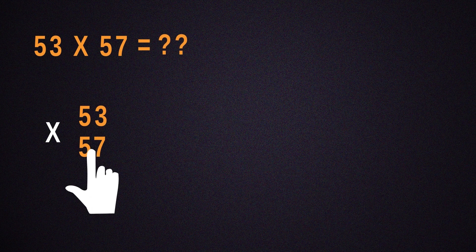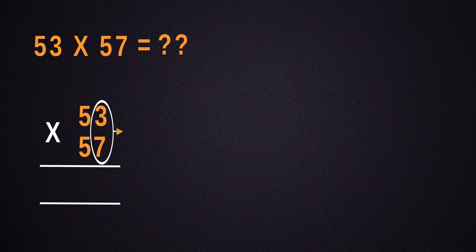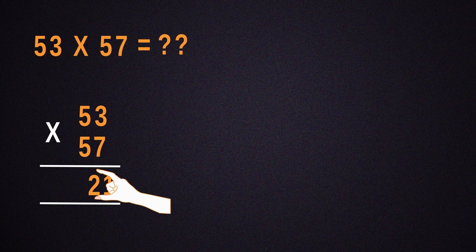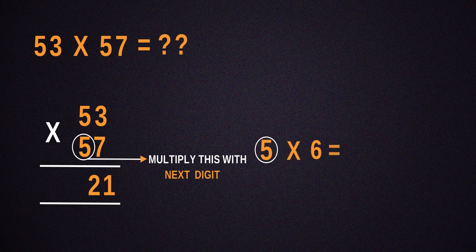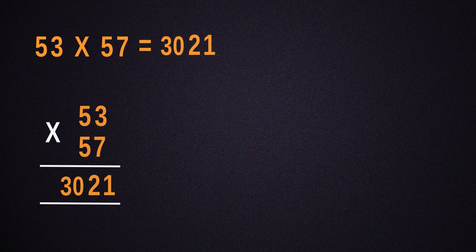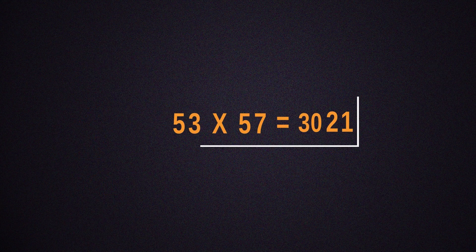Now, let's figure out how to multiply 53 by 57. For that, the number obtained by multiplying 3 by 7 will be 21 and should be put down. Then, multiply 5 with its next number, which is 6. Place the result next to 21 and we get 3,021 as the answer.